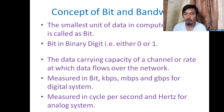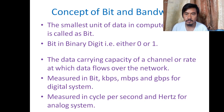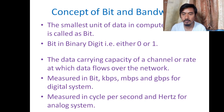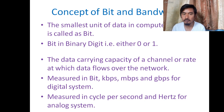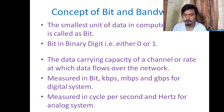Now let's cover the concept of bit and bandwidth. The smallest unit of data in a computer system is called a bit. A computer is a digital system that works only on two digits: 0 and 1. The combination of 0 and 1 makes the computer work. A bit is a binary digit — it is either 0 or 1.